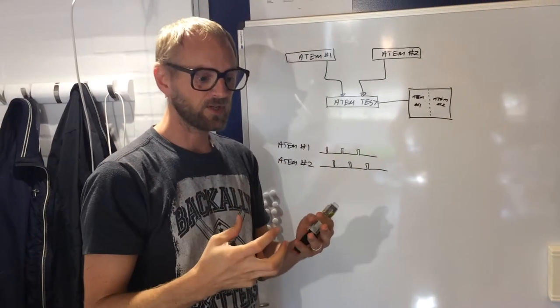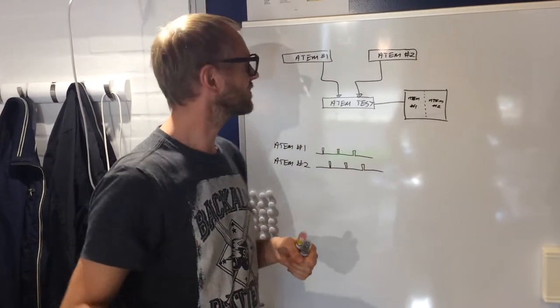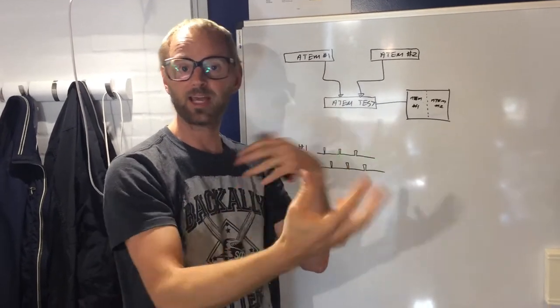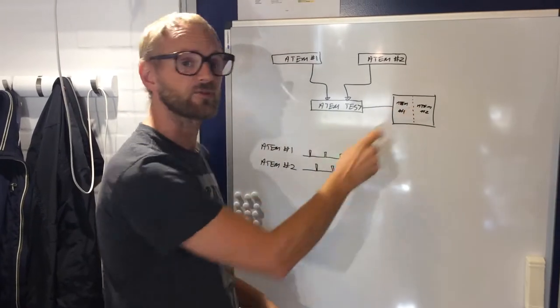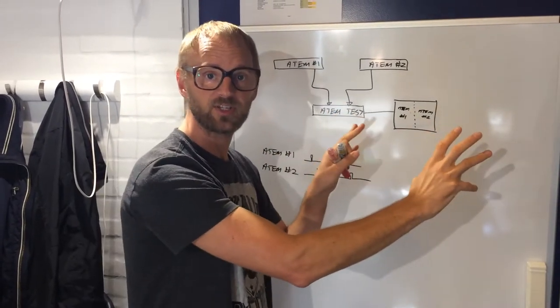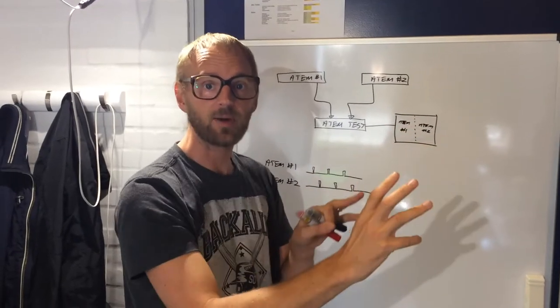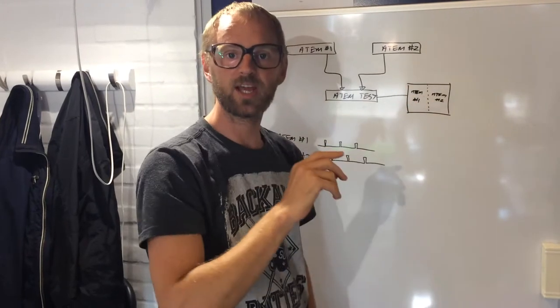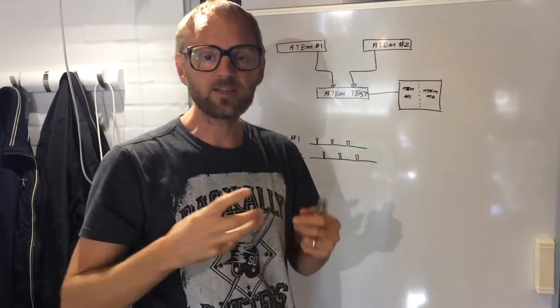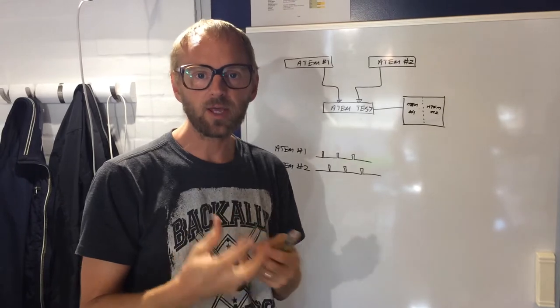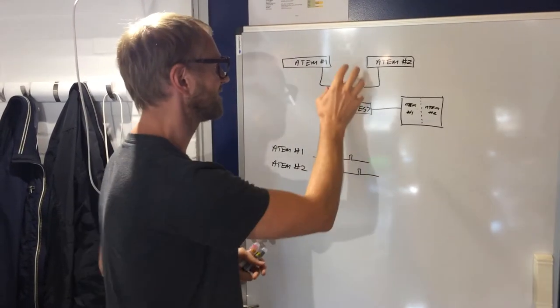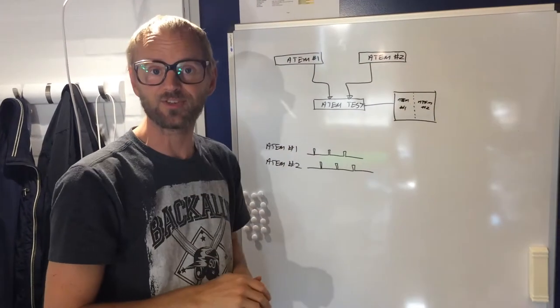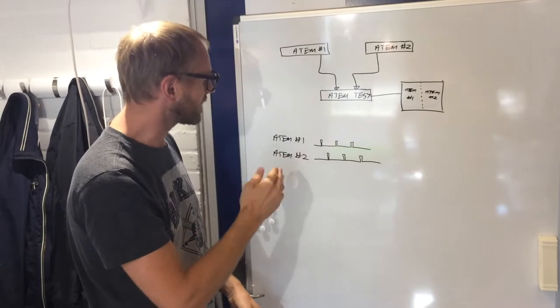Then I make a script with one of our controllers that will instruct ATEM switcher one and two to cut between black and white. On the split screen ideally I would see a full screen changing from black to white to black. But if the two switches are out of sync, then one of them would change one frame before the other one. We need to get some information about how we can control this and guarantee that this cut will happen synchronously between the two switches.